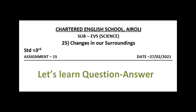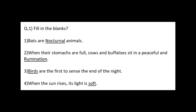So students, now we understand EBS lesson number 25: Changes in Our Surroundings. Let's learn question and answer. Question number 1: Fill in the blanks. 1. Bats are dash animals. Answer: nocturnal.